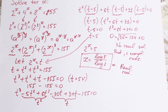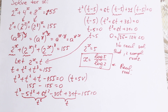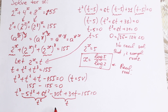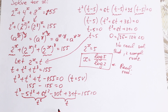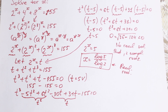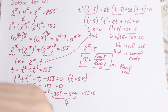I spotted t equals 5 quickly as a root and factored out (t minus 5) from there. Thank you so much for watching and for your support — I really appreciate it. Please leave a like, write any comments or suggestions, and share with your friends. It inspires me to keep making math content. See you in the next video!